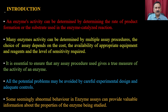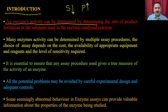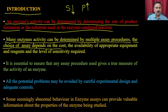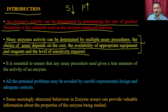An enzyme assay measures either the depletion of substrate or generation of product. Enzyme activity can be determined by the rate of product formation or substrate used in enzyme-catalyzed reactions. Many enzyme activities can be determined by multiple assay procedures. The choice of assay depends on the cost, availability of appropriate equipment and reagents, and the level of sensitivity required.